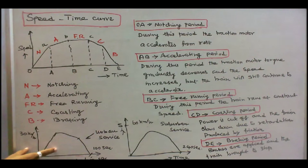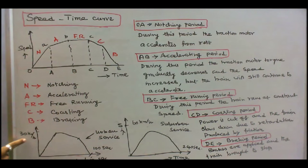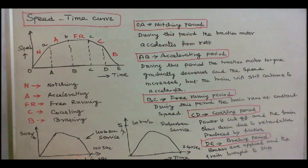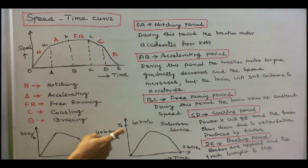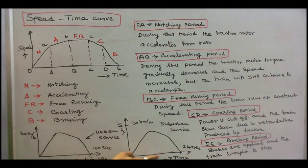This is a typical curve of an urban service, with a maximum speed of 30 kilometers per hour and time in seconds. This is a suburban service curve, with a maximum speed of 60 kilometers per hour and time in seconds.